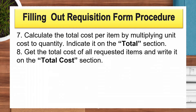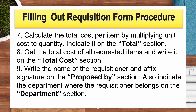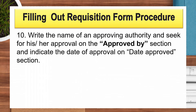Eight, get the total cost of all requested items and write it on the total cost section. Nine, write the name of the requisitioner and affix their signature on the proposed by section. Ten, also indicate the department where the requisitioner belongs on the department section. Write the name of the approving authority and seek for his or her approval on the approved by section, and indicate the date of approval on the date approved section.